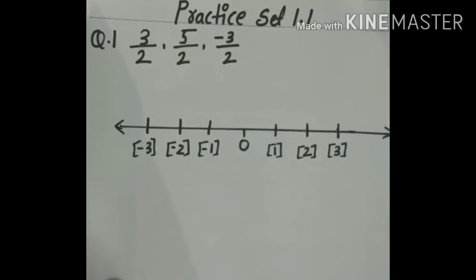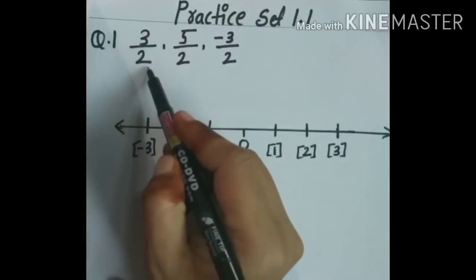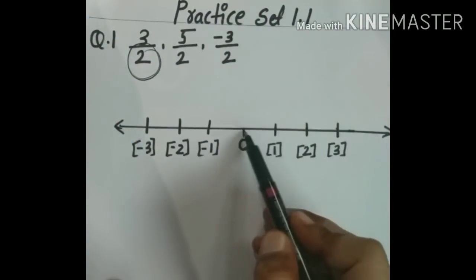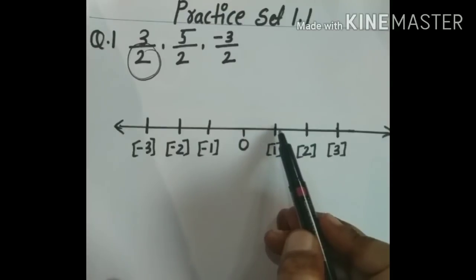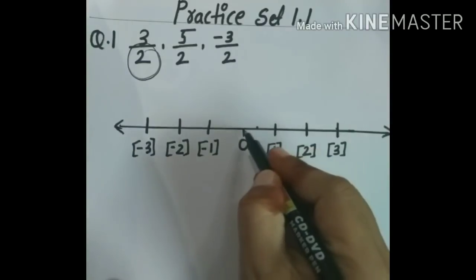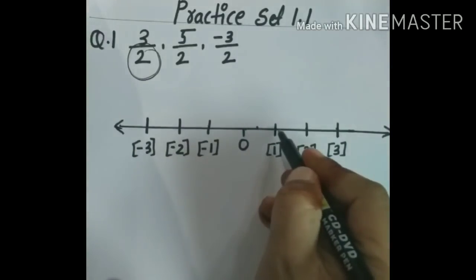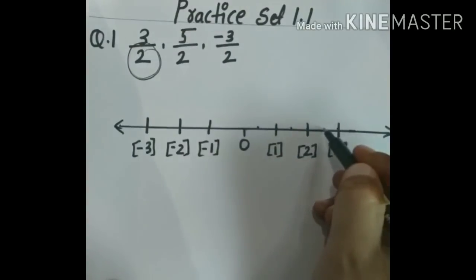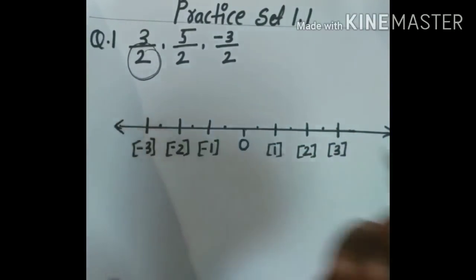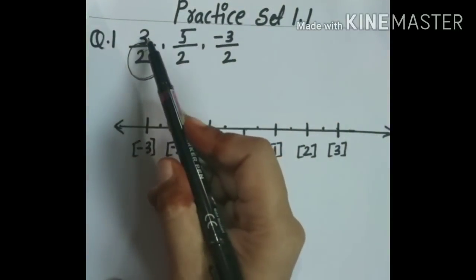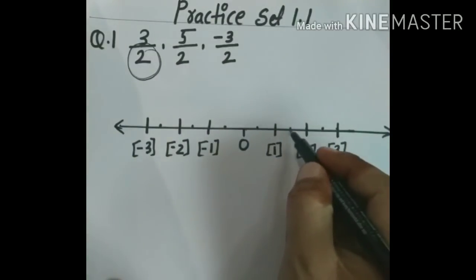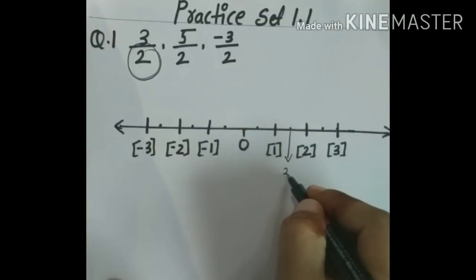Now here children, for 3 upon 2, the denominator is 2. It means the distance of 1 unit we will divide into 2 parts. So divide each unit into 2 parts. The first rational number is 3 upon 2, so start from 0 and count: 1, 2, 3. So this is 3 upon 2 — do the circle.